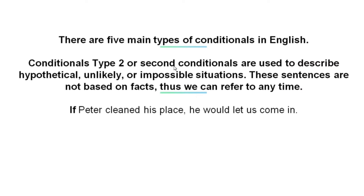There are five main types of conditionals in English, and amongst them are conditional type 2, or second conditionals. Conditionals type 2 are used to describe hypothetical, unlikely, or even impossible situations. These sentences are not based on facts, so we can refer to any time.